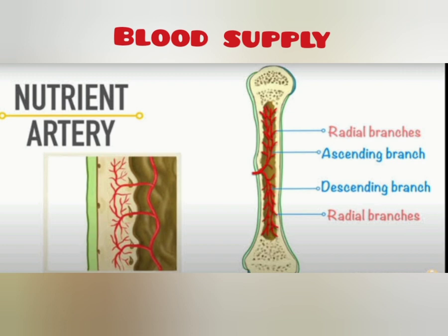Blood supply to the shaft of the bone derives from one or more nutrient arteries. The epiphyses have their own blood supply, although in the mature bone the capillary networks arising from the two are heavily interconnected.